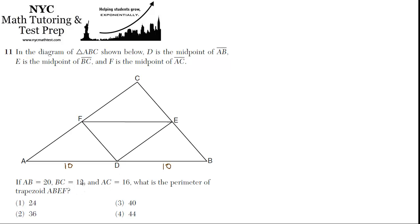Right, and if BC is 12, and E is the midpoint, then this must be 6, and this must be 6.